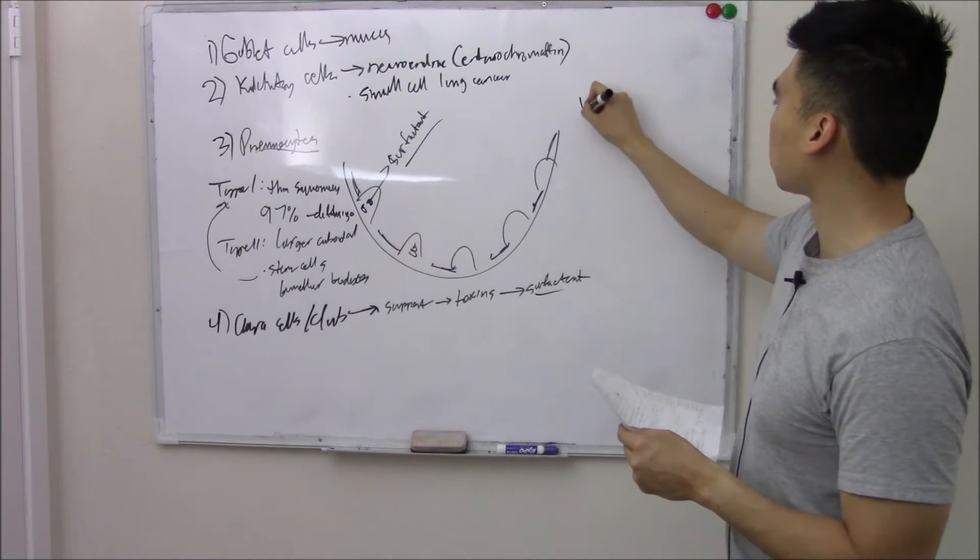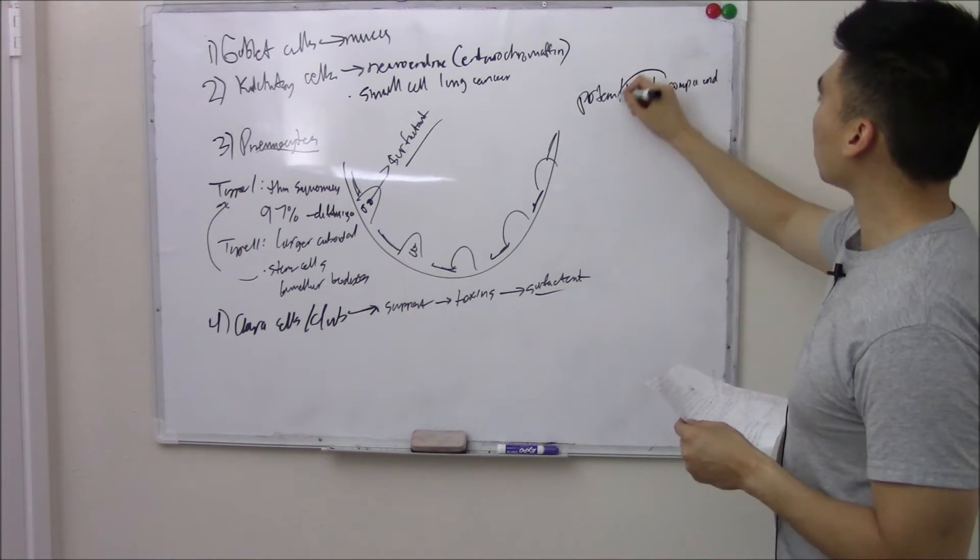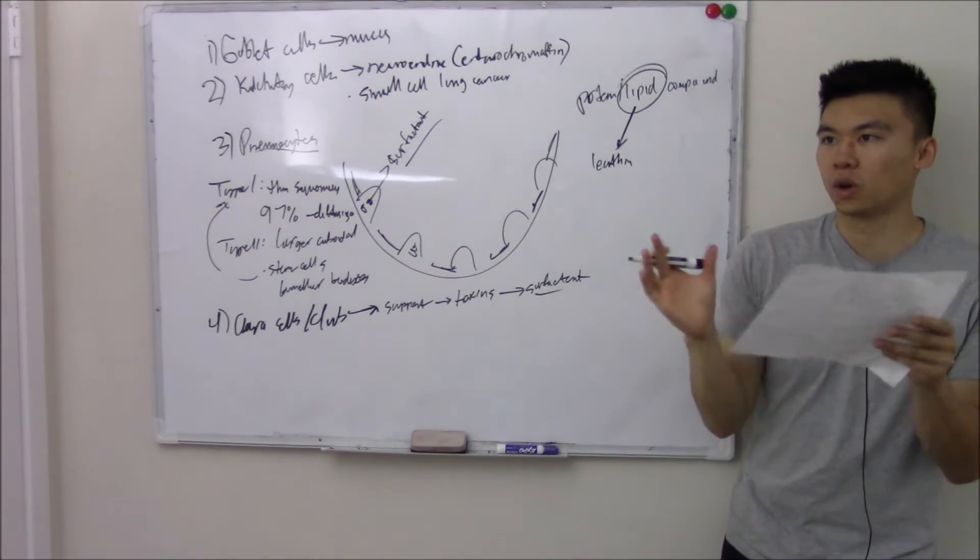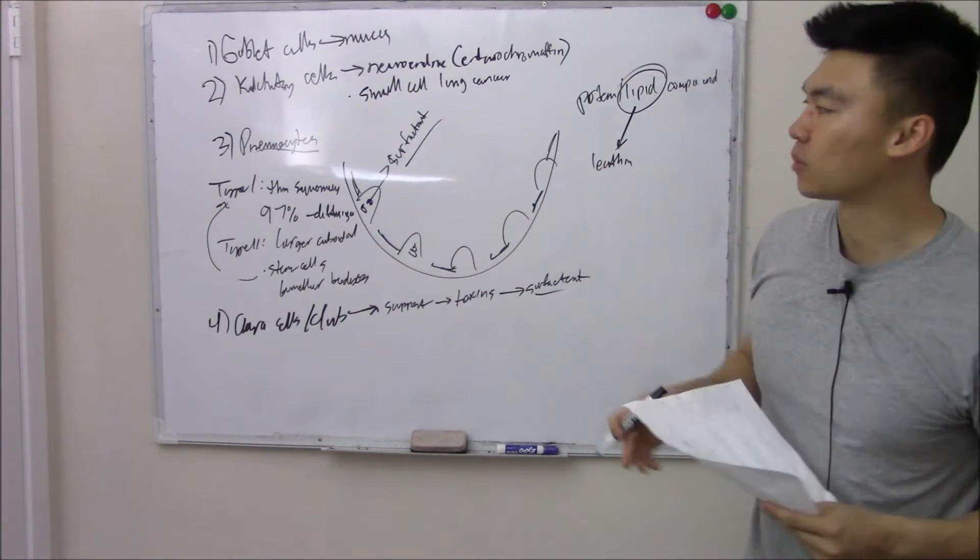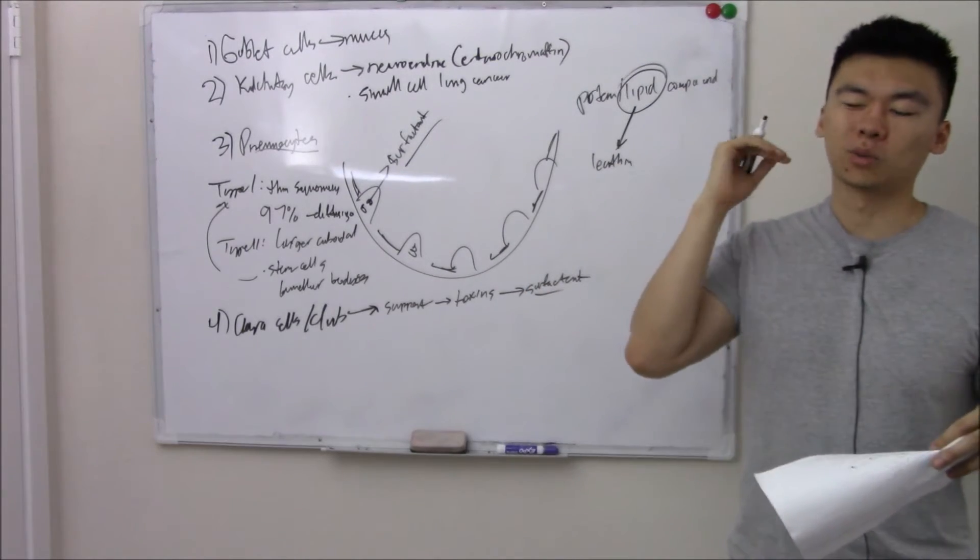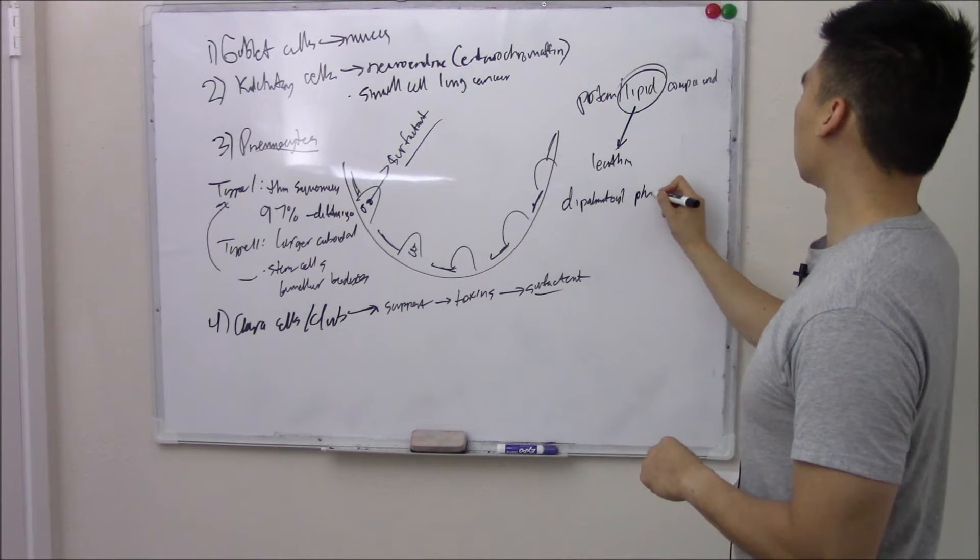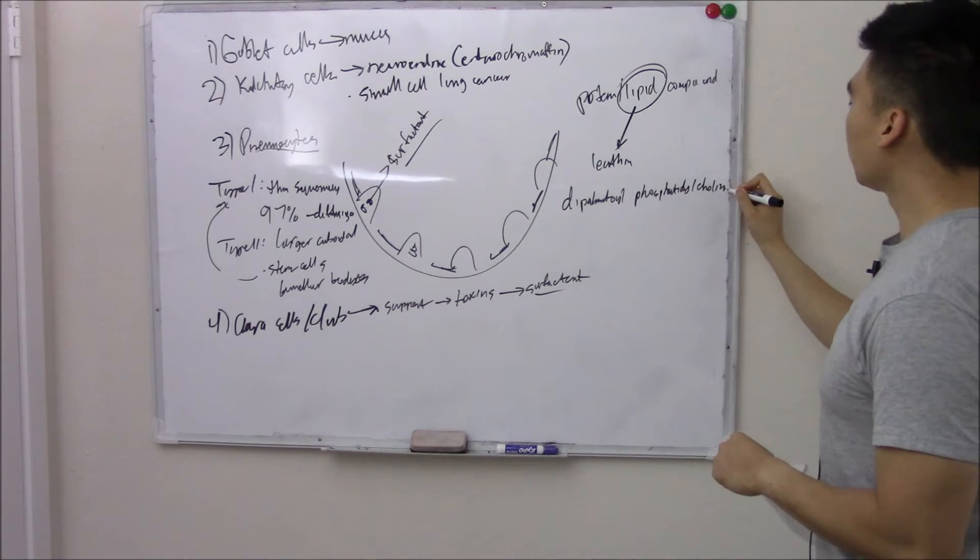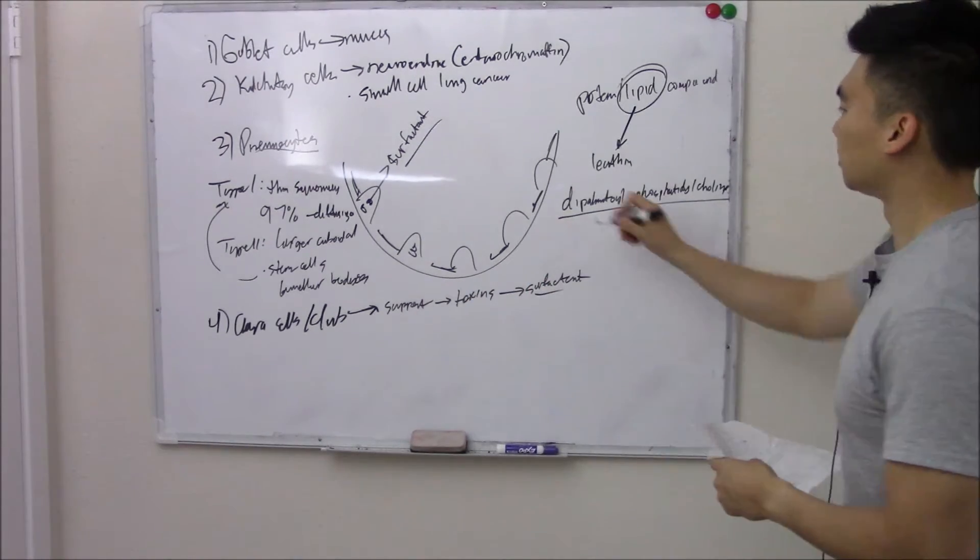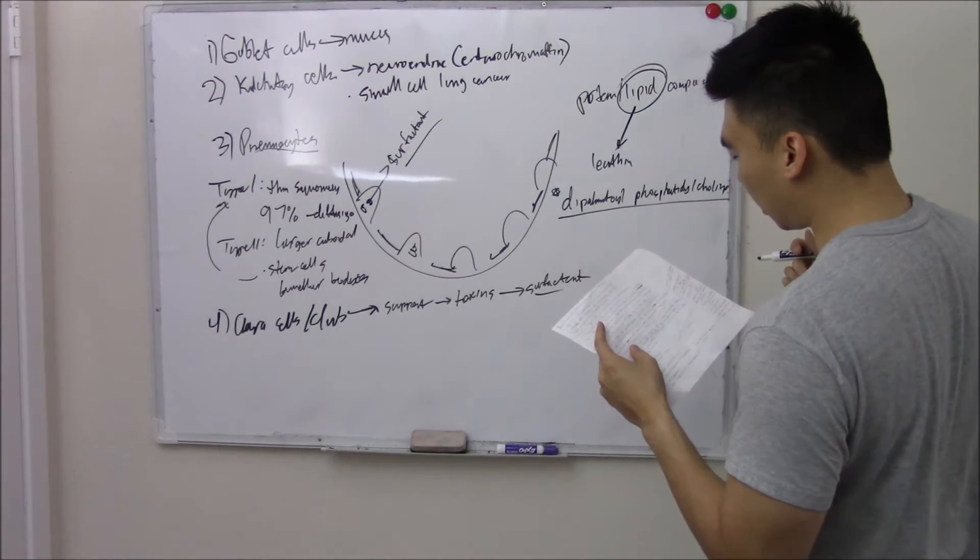What's so important about surfactant? Surfactant is this protein-lipid compound that keeps your alveoli open. The most important part of it is this lipid called lecithin. The more lecithin you have, the better. The more lecithin you have, the more apart your alveoli are or the less likely they are to collapse. The most important lecithin is dipalmitoyl phosphatidylcholine. You need to know that enough to recognize it on an answer choice.